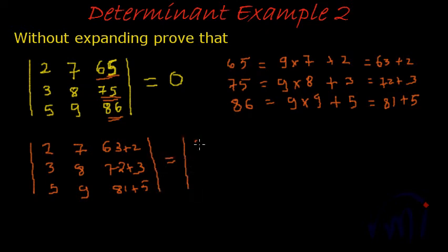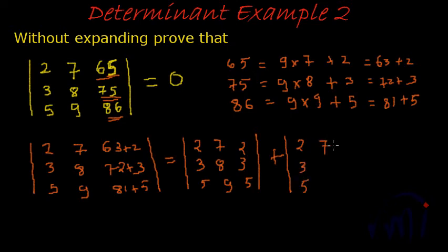Which is |2 7 2; 3 8 3; 5 9 5| plus |2 7 63; 3 8 72; 5 9 81|. This is property number 5. Now look at this first part - this determinant has 2 columns with equal values, so this becomes 0.